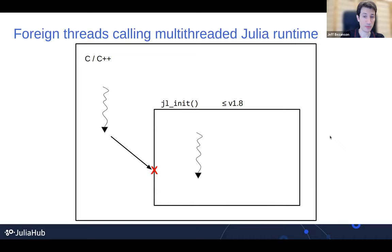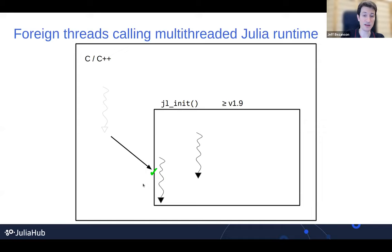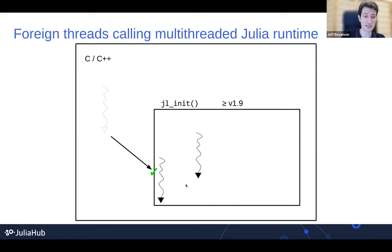In 1.9, this is fixed. When you call into a Julia entry point from a thread started in C, we now automatically set up that thread — we'll notice that it's not yet known to us, allocate the thread-local data for it, and it will be able to run Julia code. While it's running in the Julia runtime, it will join the normal scheduler and worker thread pool, becoming an available thread for scheduling Julia tasks, until you eventually return back out to C. So now multi-threaded C calling multi-threaded Julia scales and works.